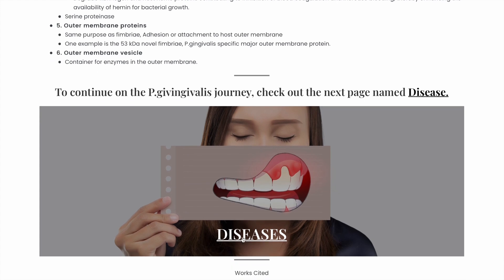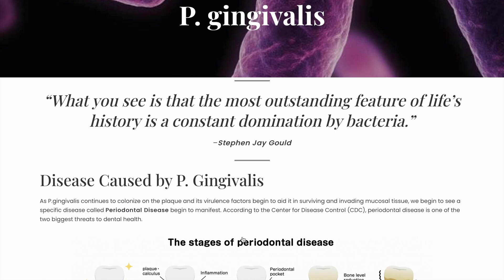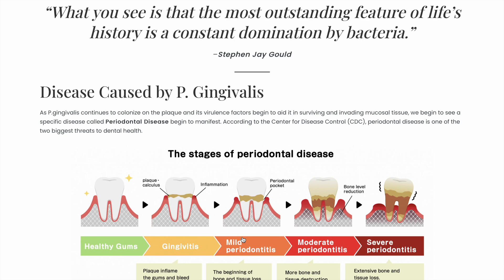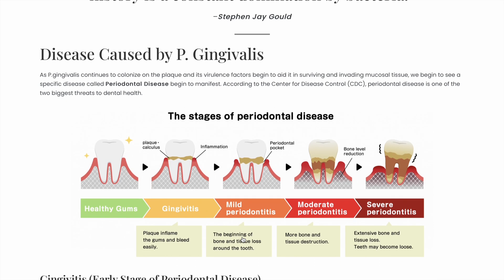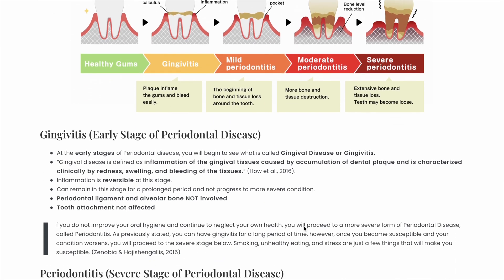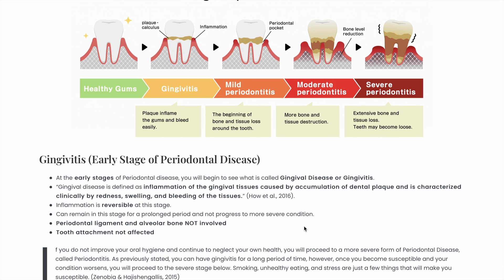Now that we know how it survives, let's see what happens next in Diseases. The major disease caused by P. gingivalis is periodontal disease. As more and more P. gingivalis and other bacteria colonize, plaque buildup gets worse until you develop inflammation in your gums, which we call gingivitis. Gingivitis is characterized by redness, swelling, and bleeding of your gingival tissue.